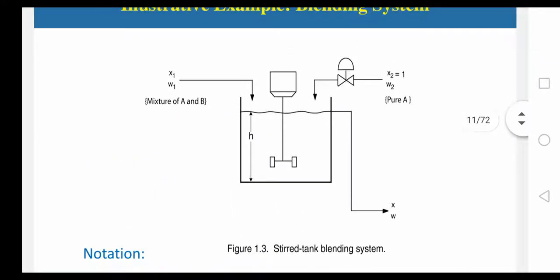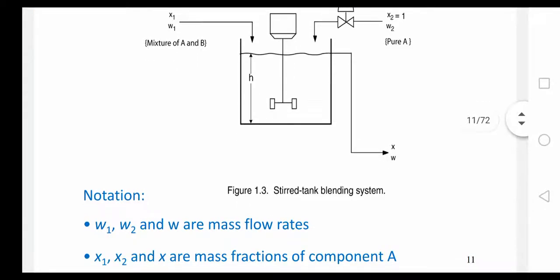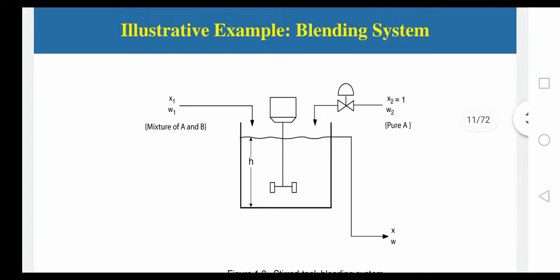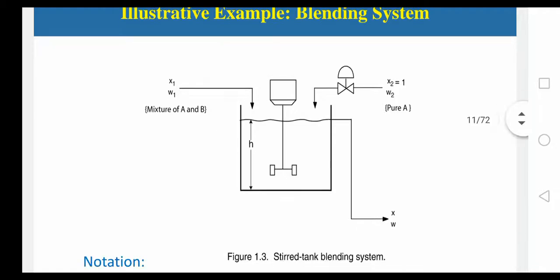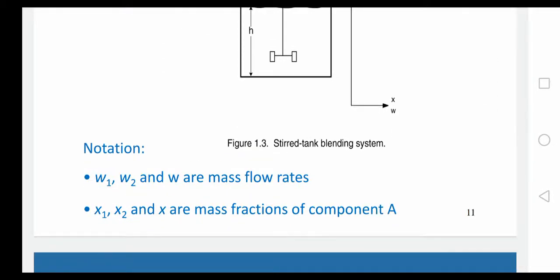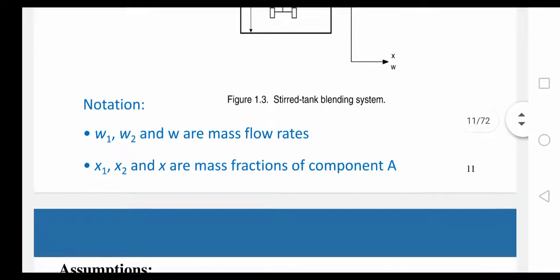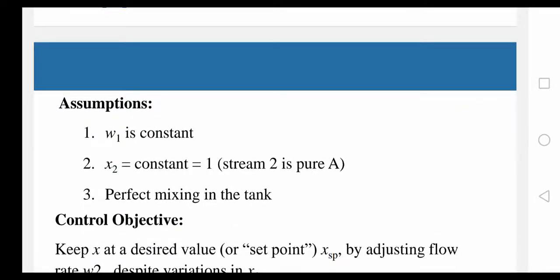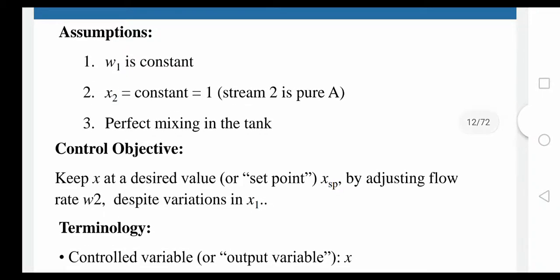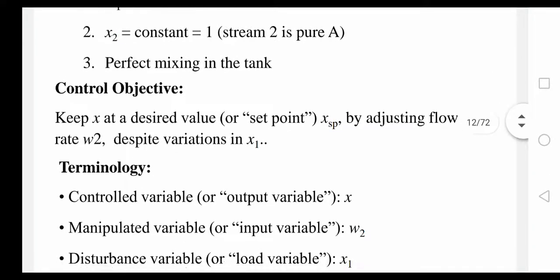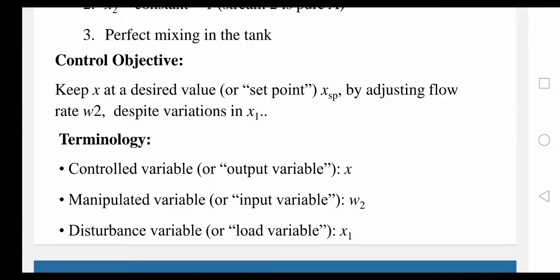Here an example — we are having W1, W2, and W as mass flow rates, and this is the container. W1 and W2 are having a mixture with some mass flow rates. X1, X2, and X are the mass fractions of any component. Assumptions: W1 is constant, X2 is constant, perfect mixing in the tank. Control objective: keep X at a desired value or set point by adjusting flow rate W2 despite variations in X1. Terminology: control variable is X, manipulated variable is W2, disturbance variable is X1.